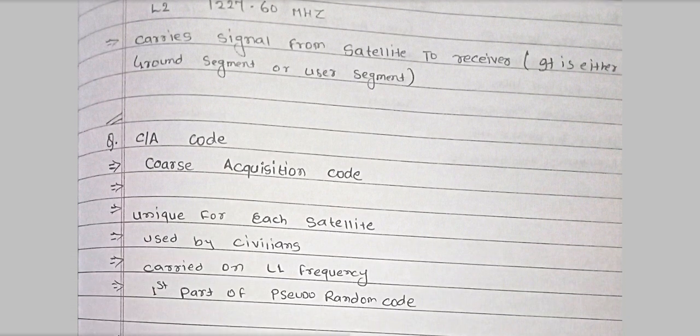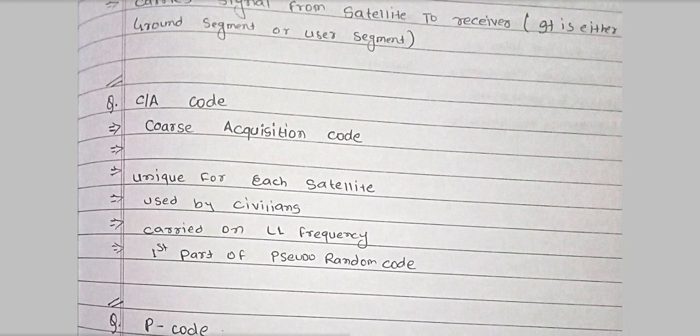Next is CA code, which means Course Acquisition Code. This code is unique for each satellite and is used by civilians. CA code is carried on L1 frequency, and it is also the first part of the pseudo random code.